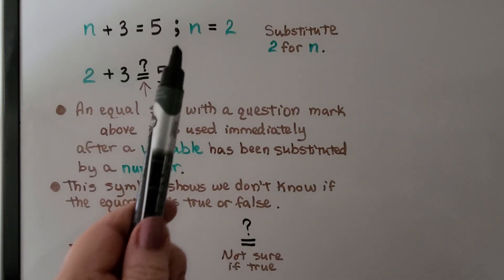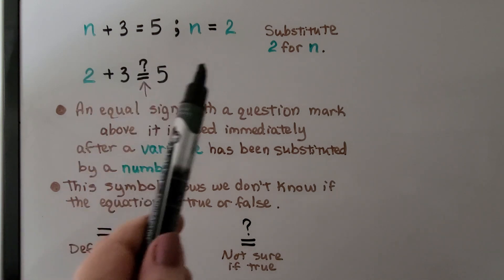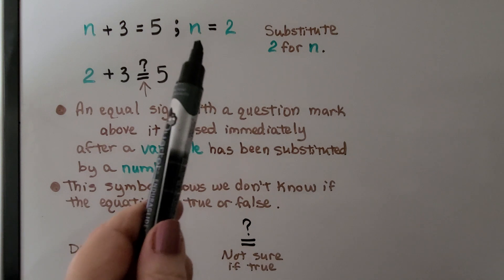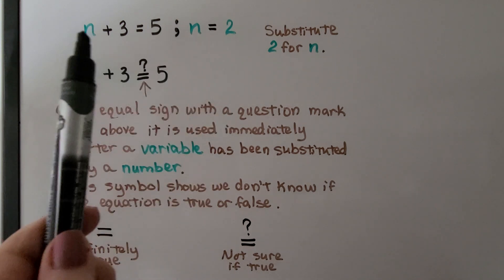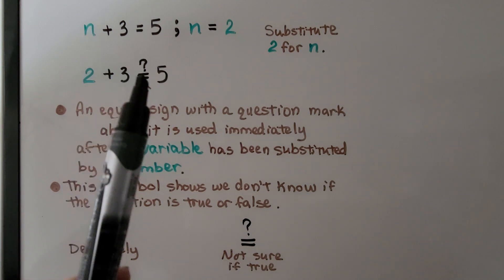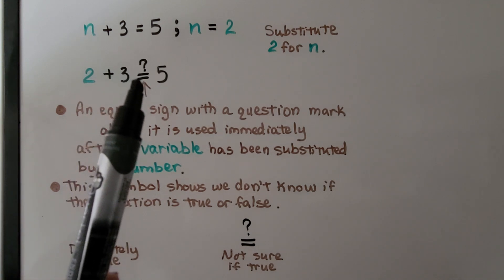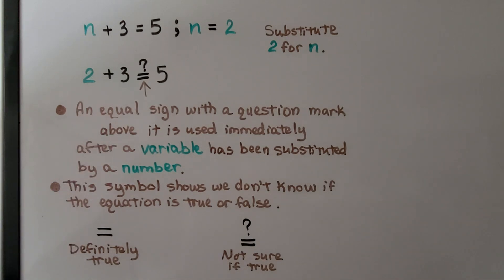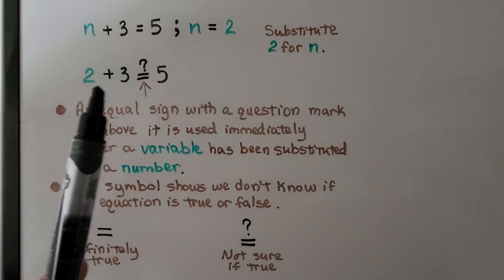Notice the semicolon between n plus three equals five and n equals two. So we are going to substitute n equals two for the n. An equal sign with a question mark above it is used immediately after a variable that has been substituted by a number. So once we substitute two for n,